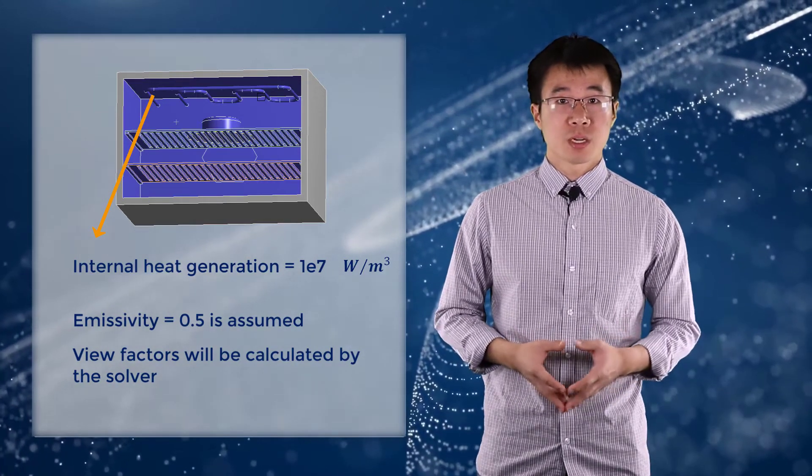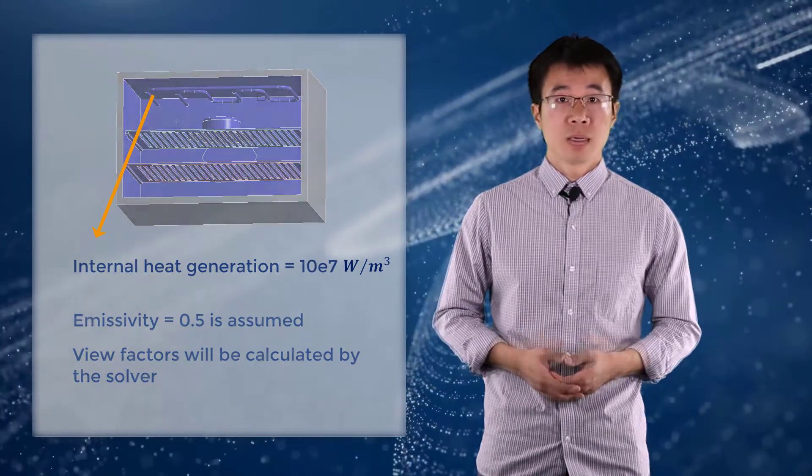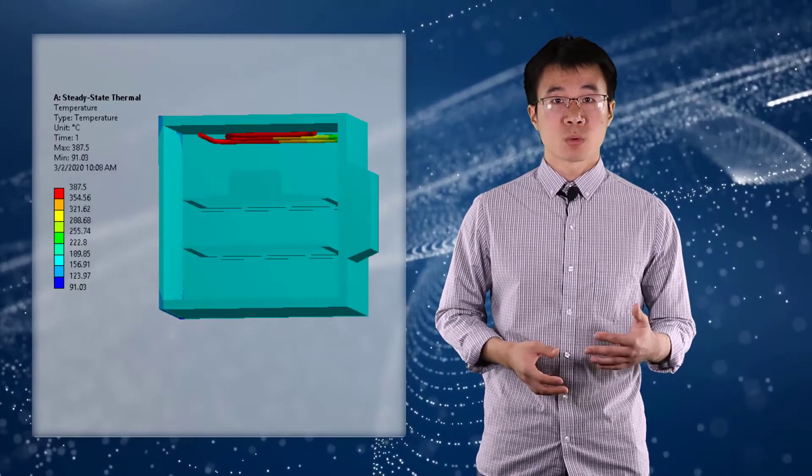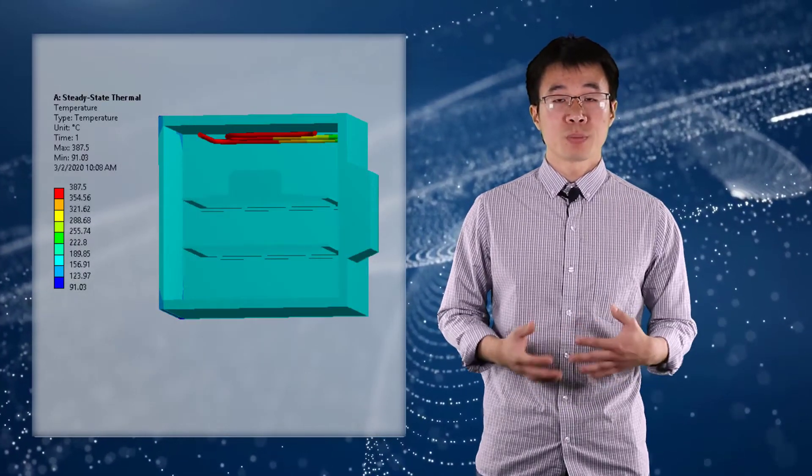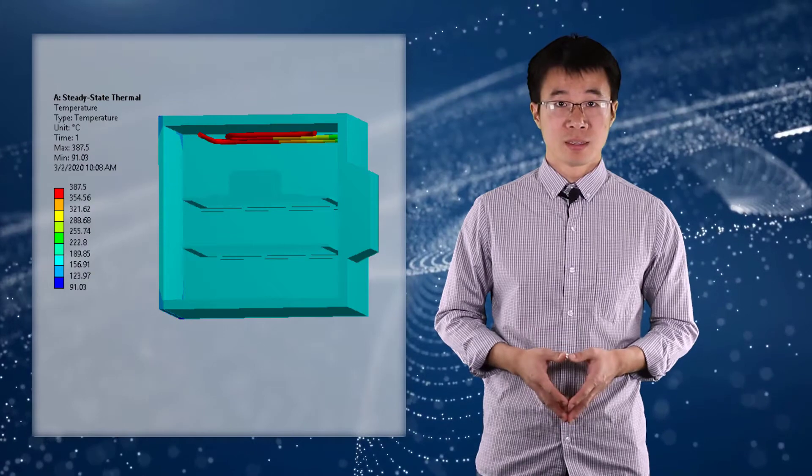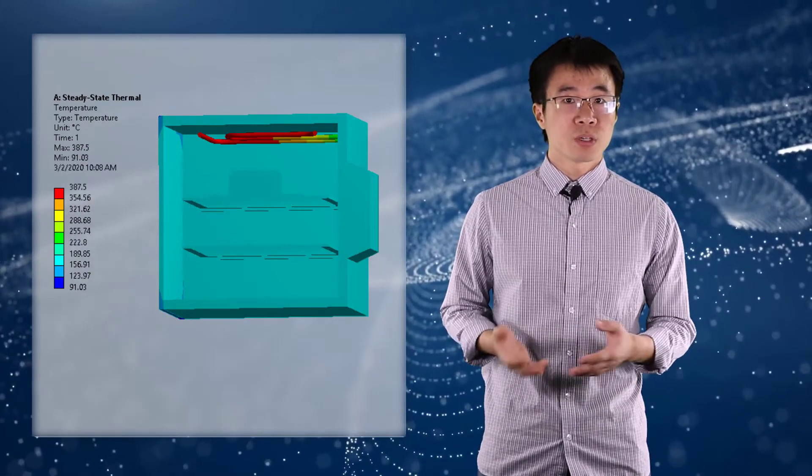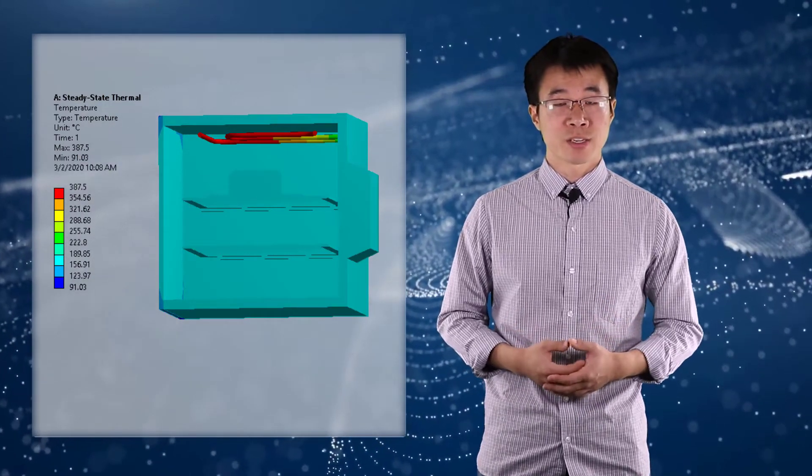Let's first do a temperature contour plot on all the parts and have a sectional view of the result. It shows the highest temperature on the coil and relatively uniform temperature distribution inside the oven. The reason for this uniform temperature distribution is the application of convection load.